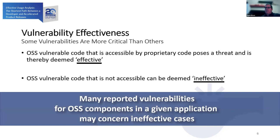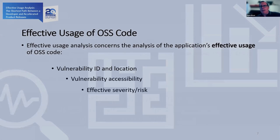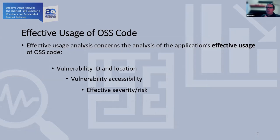The claim is that many reported vulnerabilities in a given application may concern ineffective cases. The analysis of effective usage is about exactly that — not the effectiveness of usage analysis, but the analysis of effective usage: how effectively does proprietary code reach code that is reported to be vulnerable. There are three parts: the vulnerability identification and its placement, the way one could reach or access the vulnerability, and how effective the severity or risk associated with that reported vulnerability would be.